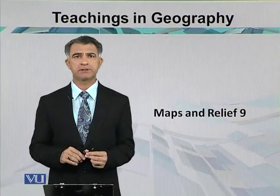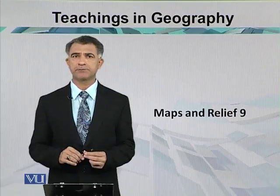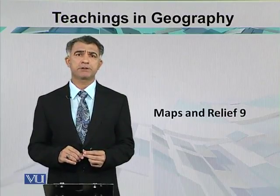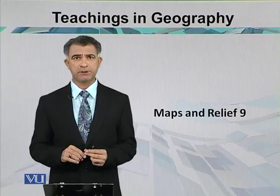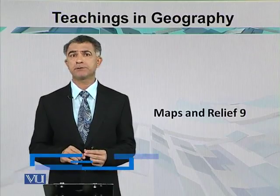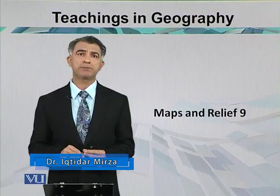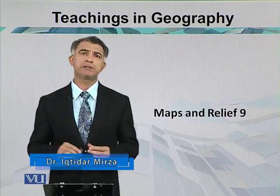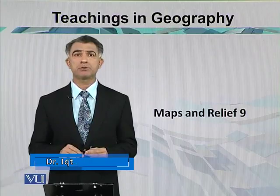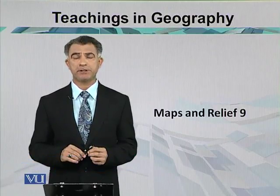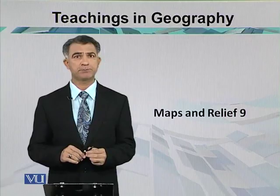The person who has skill in map making is called the cartographer. Maps are made according to scale and according to purpose. According to scale, there are three major categories: the small scale map, the medium scale map, and the large scale map. According to purpose, there are again many categories made for different purposes.